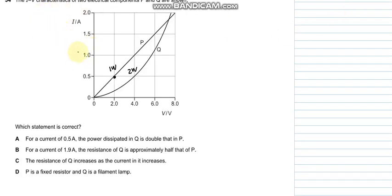Question number 34 says that the IV characteristics of two components are given. Which statement is correct? For a current of 0.5 amperes, the power dissipated in Q is double that in P. For 0.5 amperes, the power dissipated in P is 1 watt and in Q it's 2 watts, so that's correct. A is the appropriate answer.